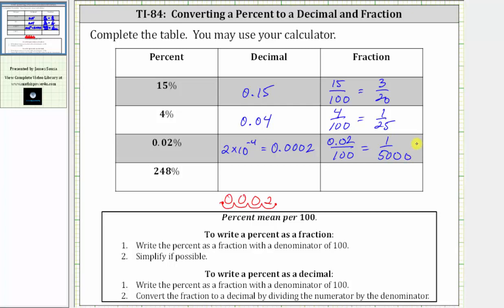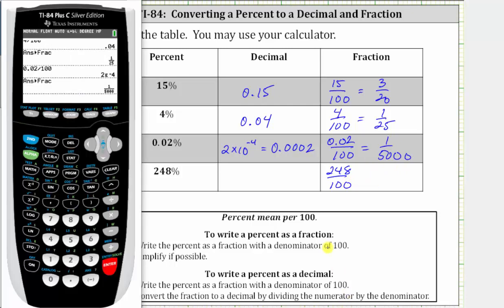For the last example, we have 248%, which as a fraction to begin is 248 over 100. Going back to the calculator one more time, we enter 248 divided by 100, which gives us 2.48, which is the decimal form of 248%.